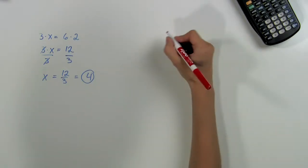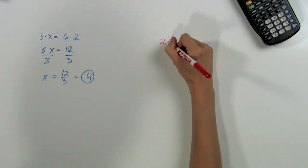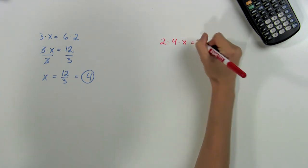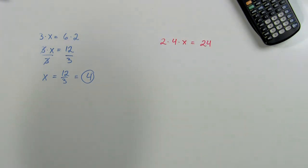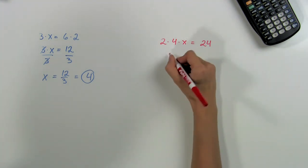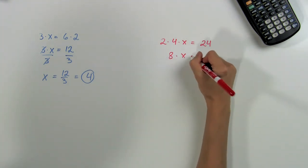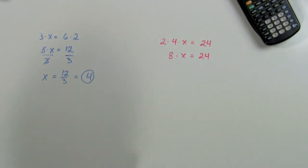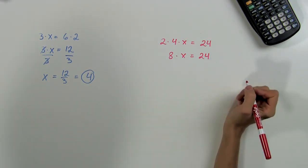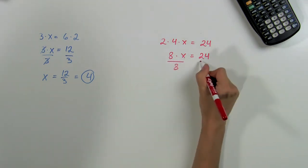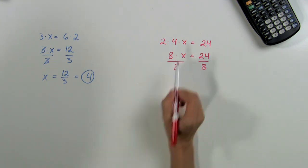Let's do another example. Let's solve 2 times 4 times x is equal to 24. First we can go ahead and multiply the 2 times 4 to get 8 times x is equal to 24. Now we use the division property again and divide both sides by 8, because we want to get rid of any numbers next to the x.